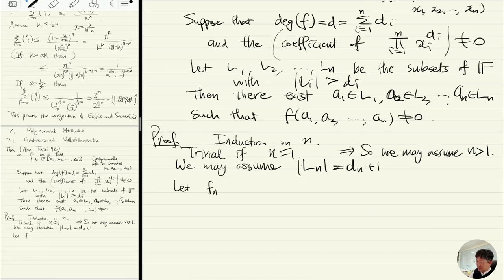Now let's define fn(xn) to be the product of (xn - t) where t is in Ln.